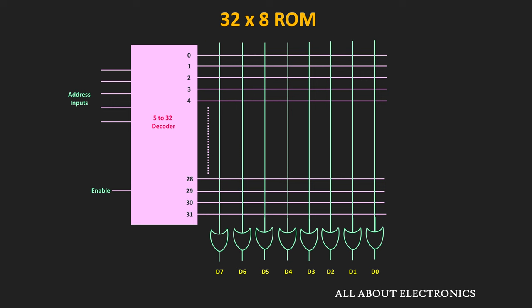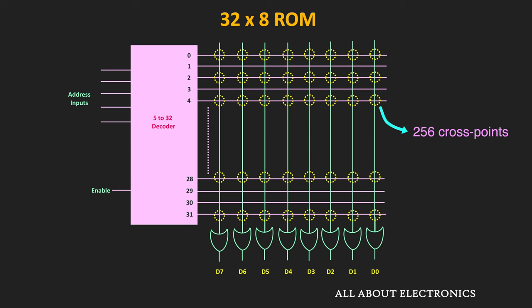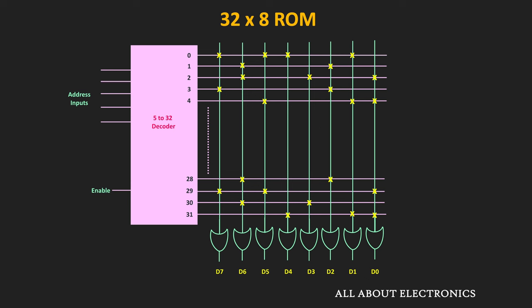Depending on how the ROM is programmed with 1s and 0s, each output of the decoder is connected to different OR gates. In this 32x8 ROM, we have 256 interconnections, or in other words, 256 crosspoints. Each crosspoint is programmable. Whenever there is an interconnection between the output of the decoder and the OR gate, it is represented by a cross symbol. If there is no interconnection, that crosspoint is left as it is. Wherever there is a cross, it represents logic 1; wherever there is no interconnection, it represents logic 0.